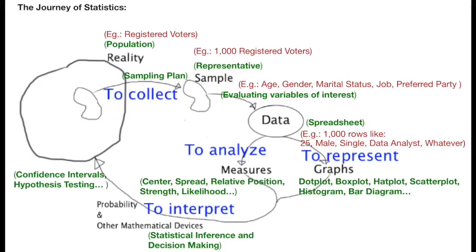Then we turn the sample into data by evaluating in it different variables of interest. Let me explain this with an example. We want to predict what might happen in the following elections. The population is the set of all the registered voters. We can pick thousands of them and this is our sample. What are the variables of interest here? I am thinking of five: age, gender, marital status, job and preferred party.